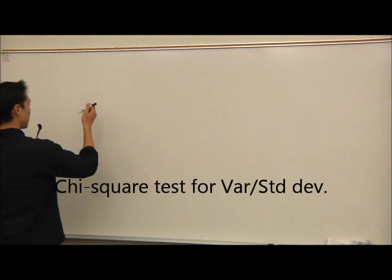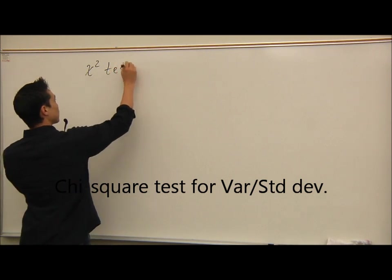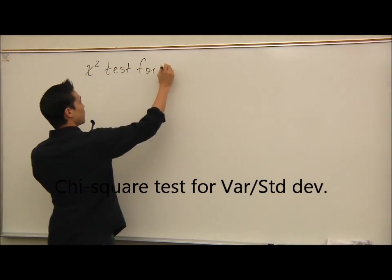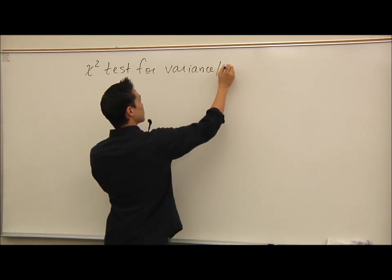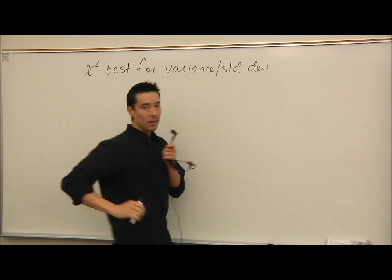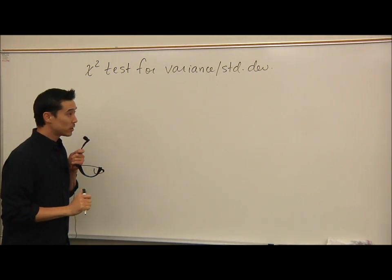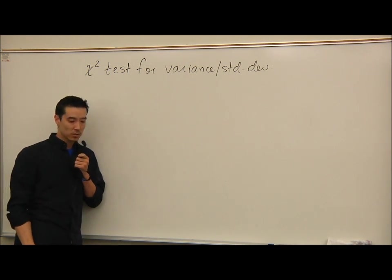Okay, so I'm going to call this chi-square test for variance and standard deviation. And again, anytime I introduce a new test, I have to tell you what distribution, and I did that in the title, uses the chi-square distribution.